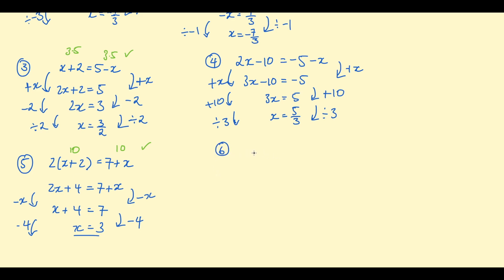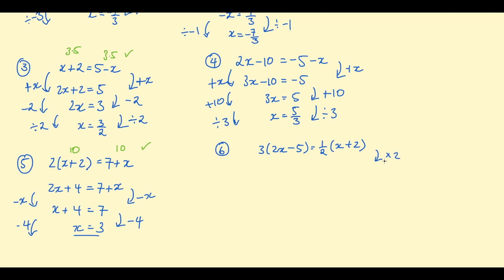Final example with brackets on both sides: 3 times (2x take 5) equals a half times (x plus 2). We could expand all brackets, but expanding the right gives a half x plus 1, and that half x will be annoying. So instead, multiply both sides by 2 to eliminate the fraction. Multiplying the right by 2: a half times 2 is 1, leaving x plus 2. On the left, 3 times 2 is 6, giving 6 times (2x take 5).